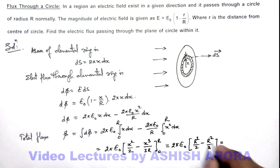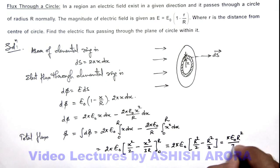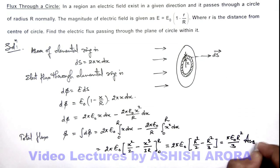So this will be R²/6, so the result we are getting is πE₀R²/3. That will be the answer to this problem.